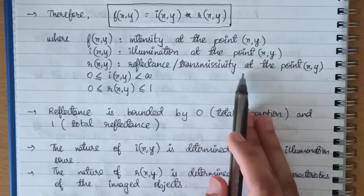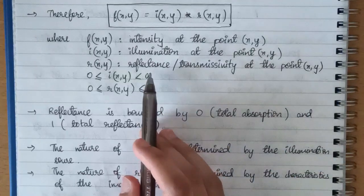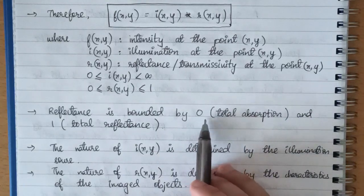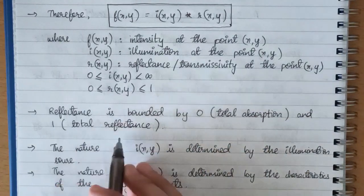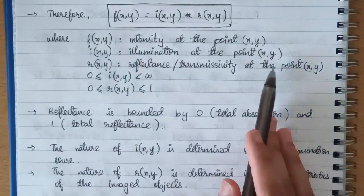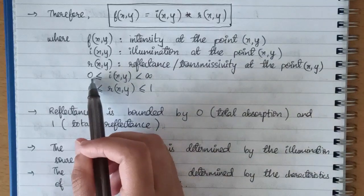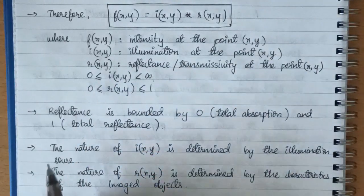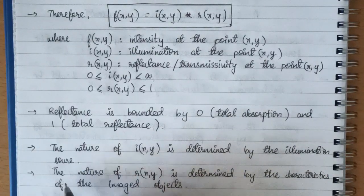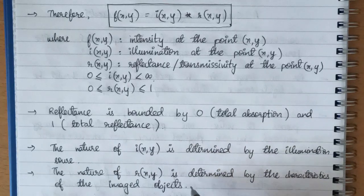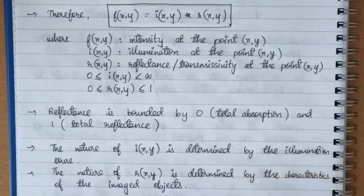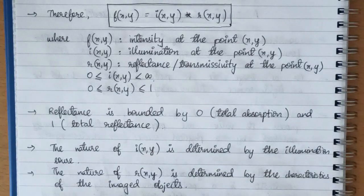Now reflectance is bounded by zero and one. Why? Because zero represents total absorption and one represents total reflectance. But that is not the case with illumination at the point x comma y, so that is why it is bounded by zero and infinity. The nature of i of x comma y is determined by the illumination source, whereas the nature of r of x comma y is determined by the characteristics of the imaged objects. So that was it with the simple image formation model.